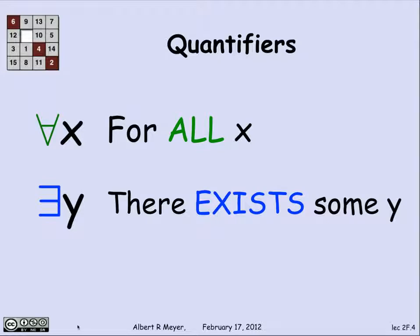The quantifiers are read as 'for all' and 'exists,' but they control a variable. I write upside-down A x and read it as 'for all x,' and backward E y is read as 'there exists some y.' So let's see how that would work.